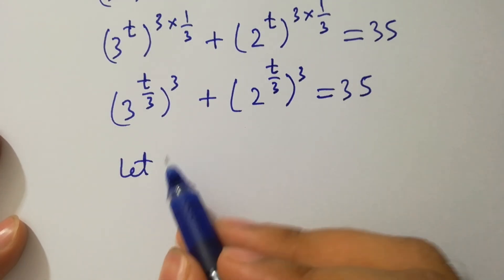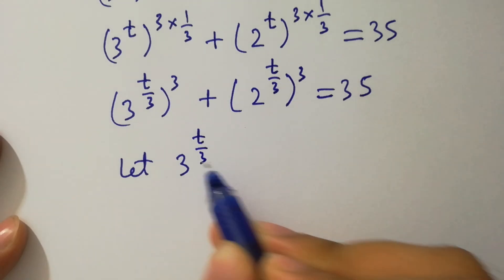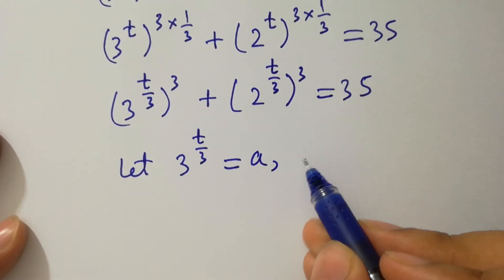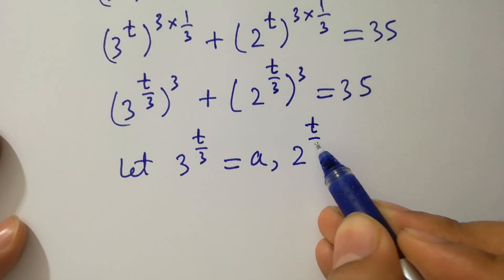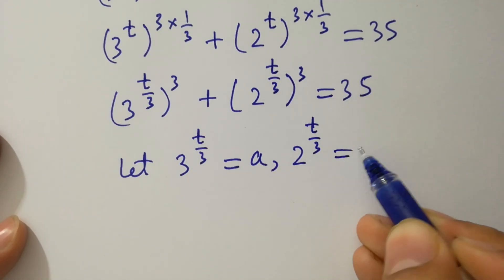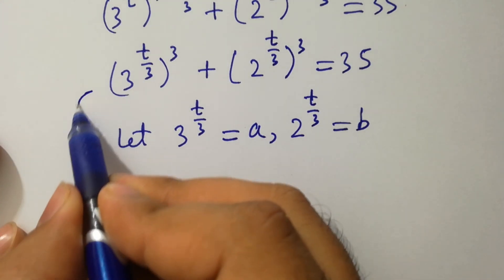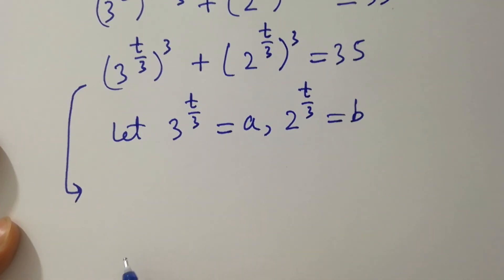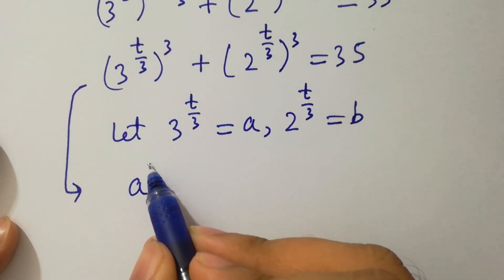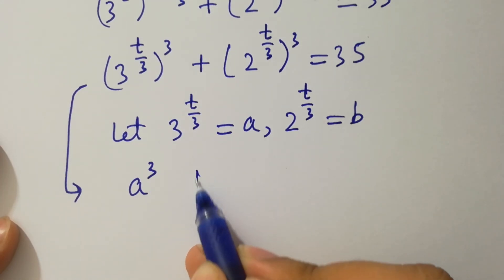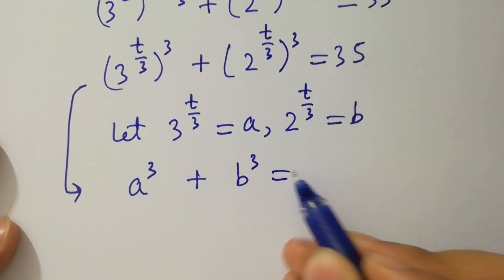Let's simplify: let 3 to the power t over 3 equal to a, and 2 to the power t over 3 equal to b, where a and b are natural numbers. Then the equation becomes a cubed plus b cubed equals 35.